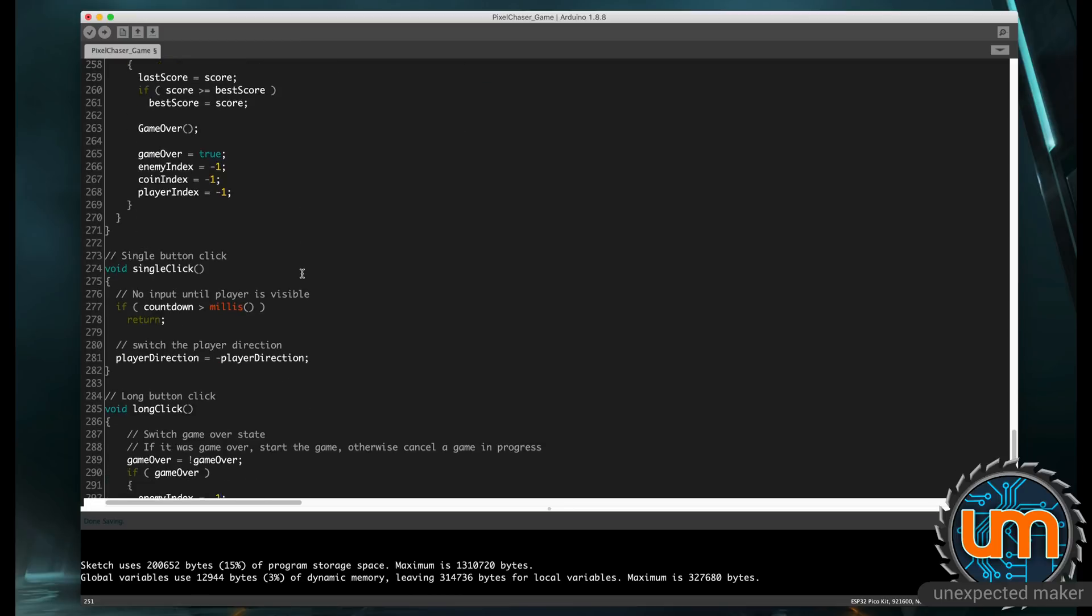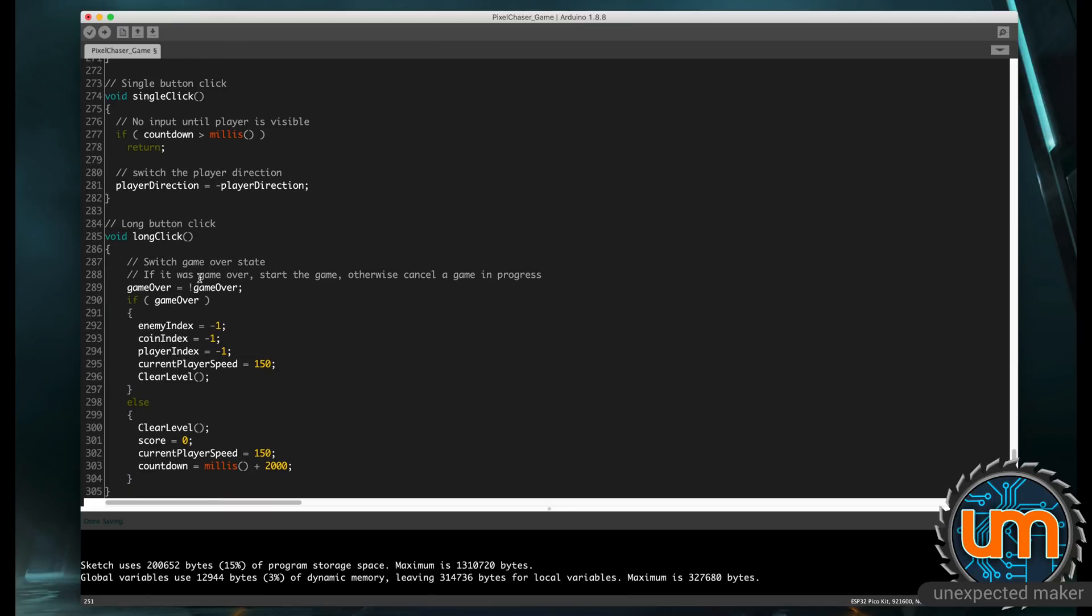Single click just changes the player direction, and obviously you can't do that while the two-second countdown is happening. And a long click will basically switch between the game over states, so if it wasn't the game over, it makes a game over, and if it was a game over, it resets the game. So that means you can actually exit the game in the middle of the game if you want to stop playing. Or you can just not press the button and let the player die. And that's it. That's all the code.